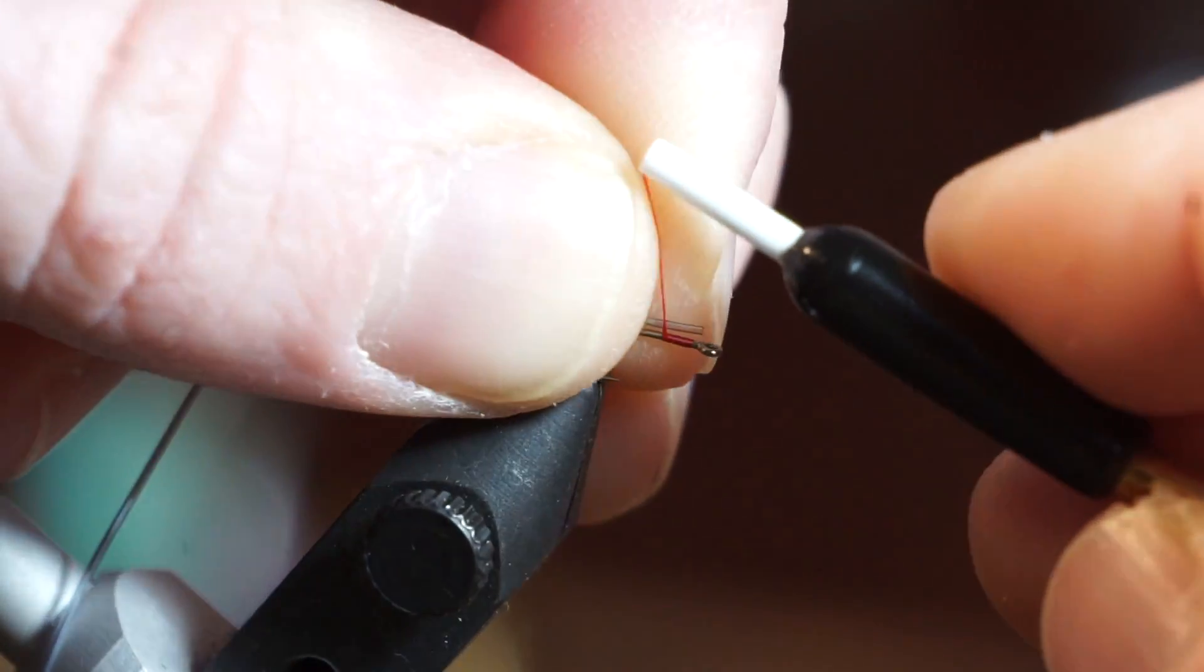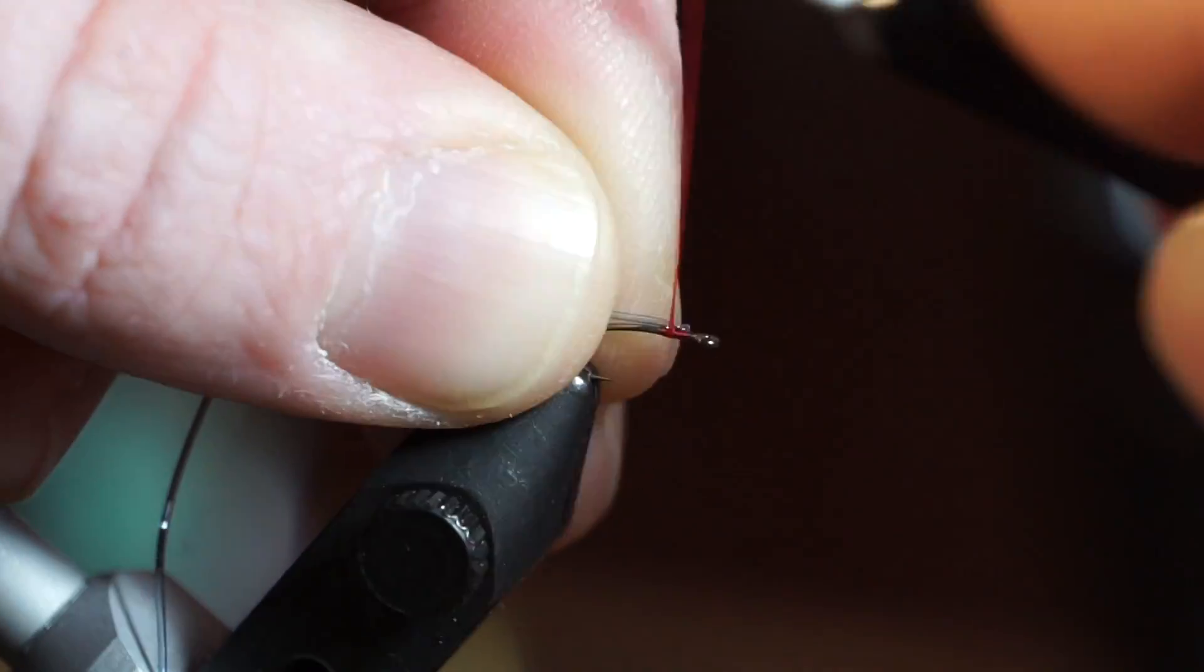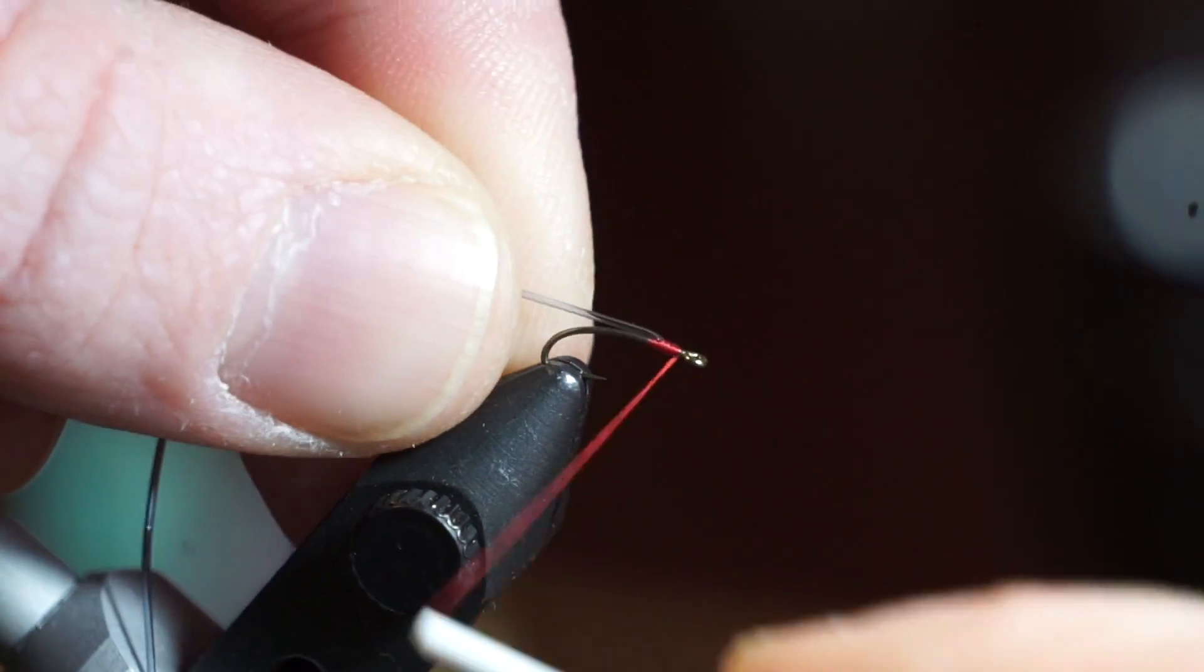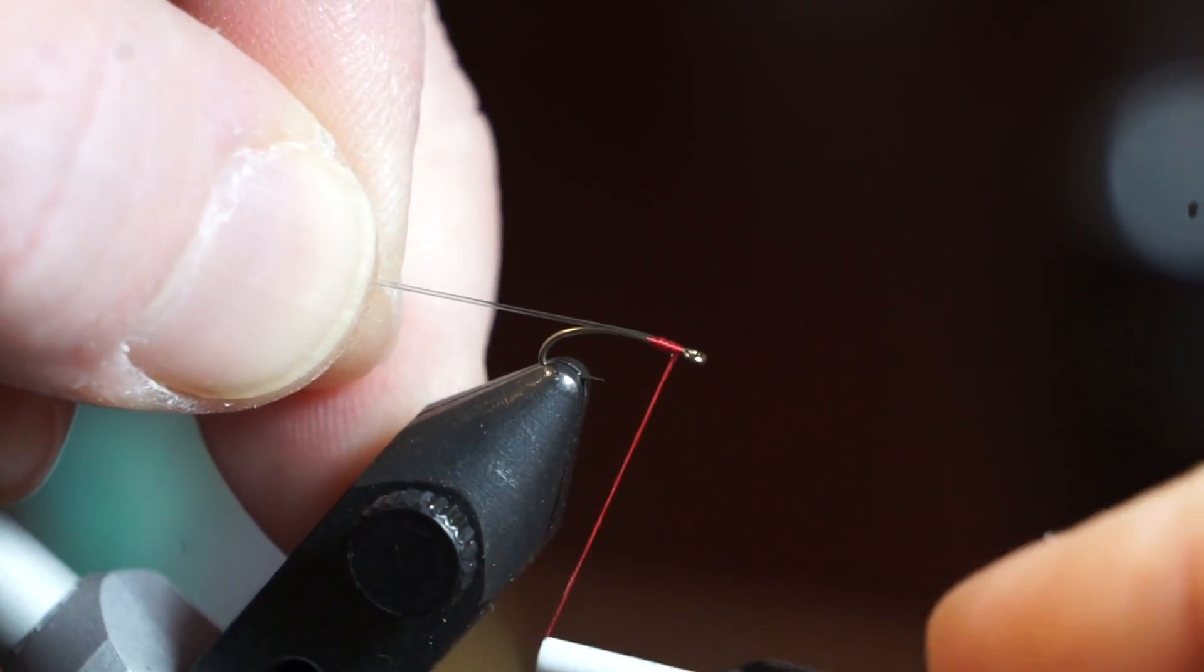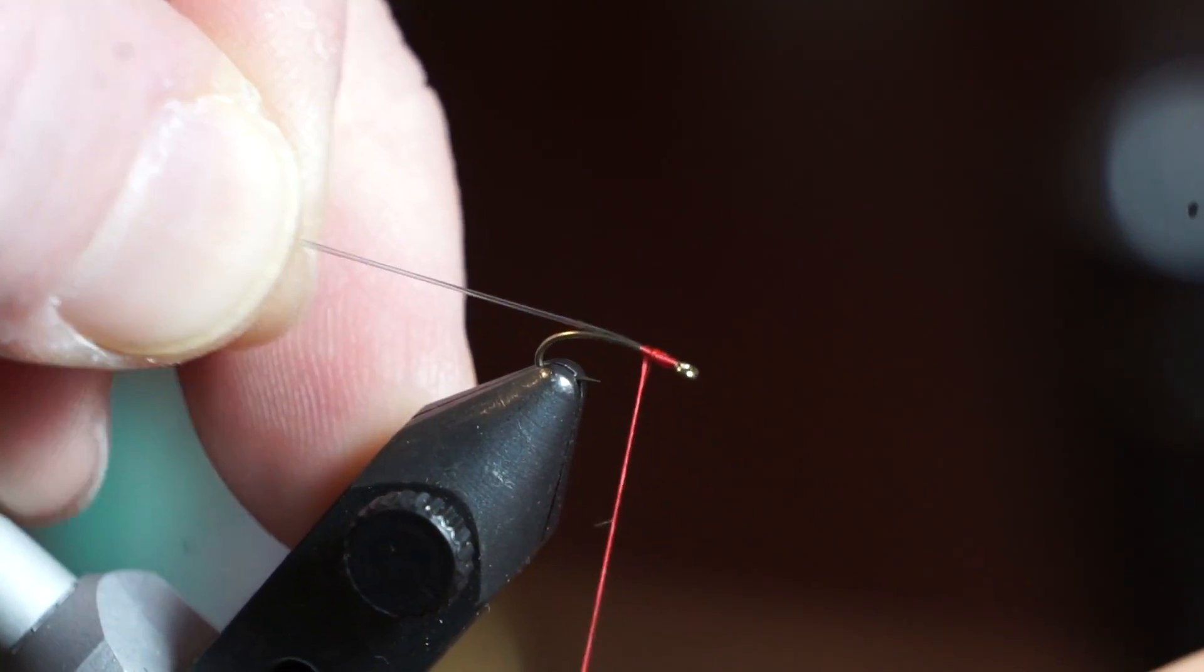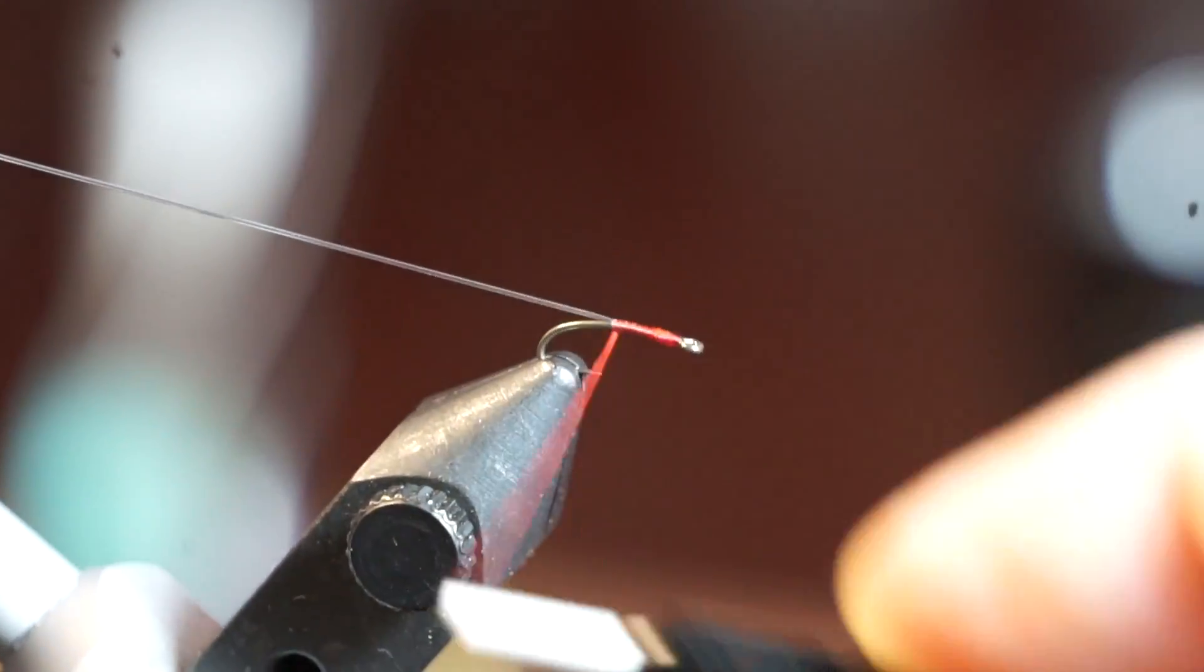Now attach some gray micro tubing with a pinch wrap. Then stretch the tubing tight and start wrapping down the hook shank about to the bend of the hook. Make sure to keep the tubing on top of the hook.